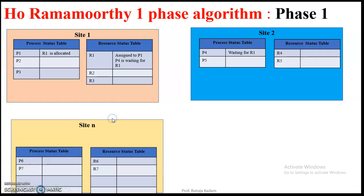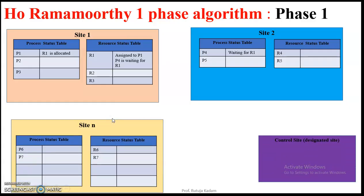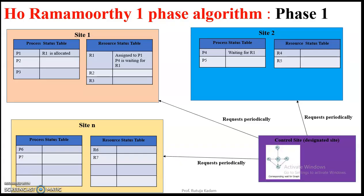When we say that this is a centralized algorithm, that means there is a central node or a center site that will come into picture. So this control site periodically requests for the status tables from all the sites. All the sites will in turn reply the status tables. The control site will form a wait-for graph and it will check for a cycle. If cycle is there, then there is a deadlock. If no cycle, then there is no deadlock.